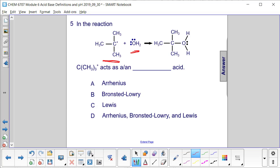But for an Arrhenius acid, we have to see an increase in the H3O+ concentration, and we don't see that as a product at all.